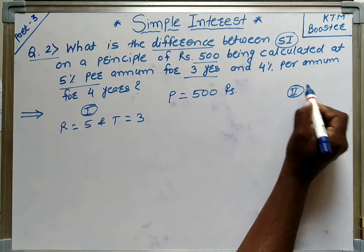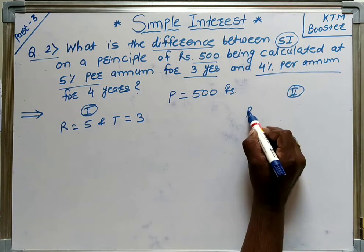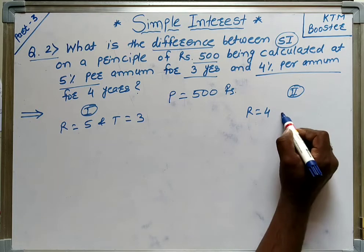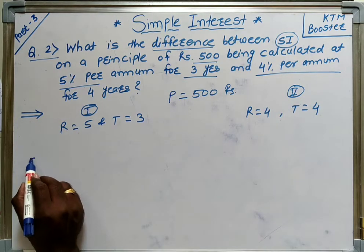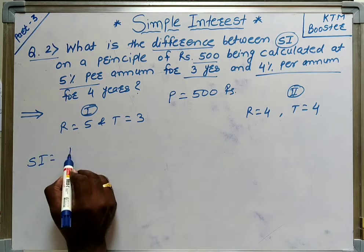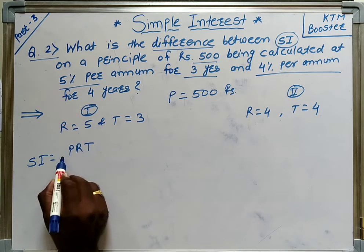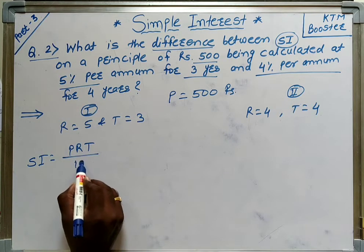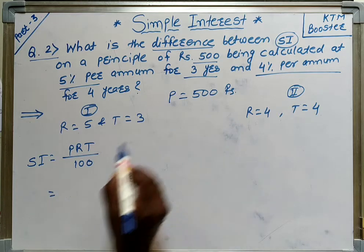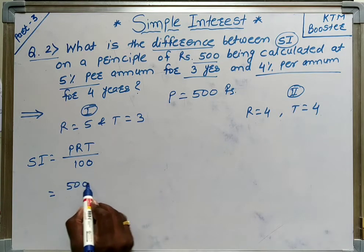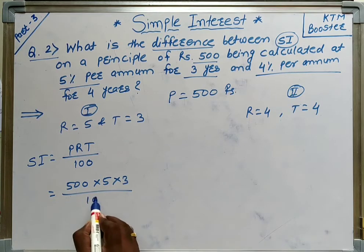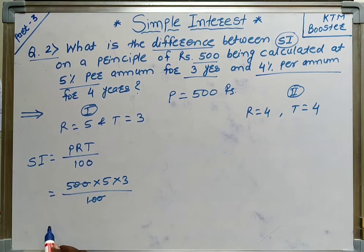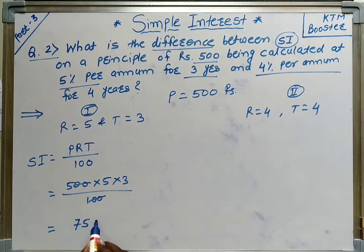For Case 2, rate is 4% and time is 4 years. So for Case 1, SI equals P into R into T upon 100. P is 500, R is 5, T is 3, divided by 100. The zeros cancel, 5 into 3 is 15, so SI equals 75 rupees.